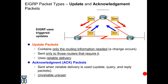Update packets are used to send triggered updates. EIGRP does not send periodic updates like distance vector protocols; it sends triggered updates only when a change occurs. Update packets are sent as multicast or unicast and contain route information. When a new route is discovered, updates are sent as multicast; when a new EIGRP router comes up, they are sent as unicast and require acknowledgement. Acknowledge packets are sent as acknowledgement for an update or reply packet, always in unicast form, and do not require acknowledgement.